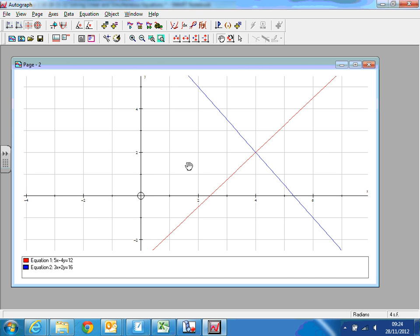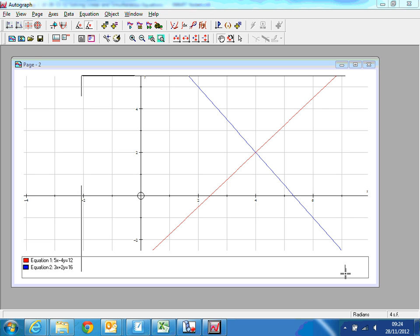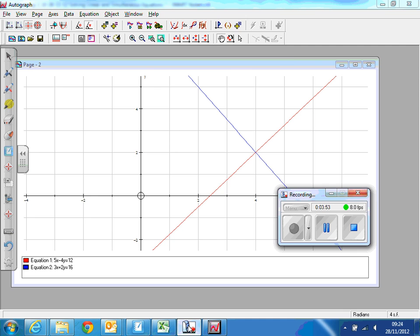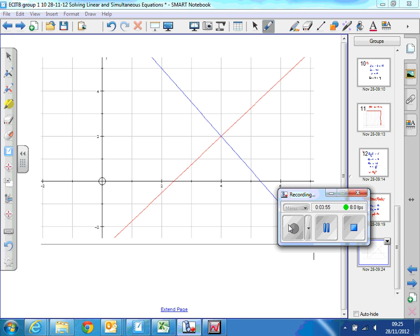So if I save this and put it into the notes. Graphically then, we find where they cross, which tells us it looks like x equals 4 and y equals 2.